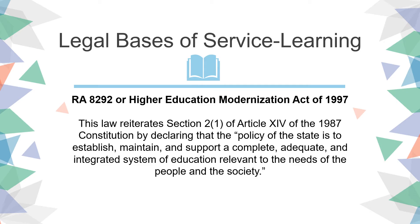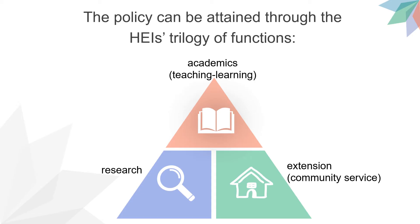What is the legal basis of service learning? Under Republic Act 8292, or the Higher Education Modernization Act of 1997, this law reiterates Section 2, Paragraph 1 of Article 14 of the 1987 Constitution, declaring that the policy of the state is to establish, maintain, and support a complete, adequate, and integrated system of education relevant to the needs of the people and society. This policy can be attained through the HEI — Higher Education Institution — strategy of function.